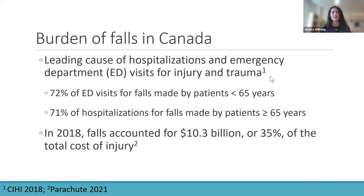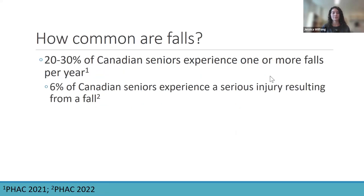In a recent report, 72% of emergency department visits made for falls were made by patients under the age of 65, while 71% of hospitalizations for falls were made by patients older than 65 years. So really, falls are a problem across adulthood, but it becomes a bit more severe in older age groups. In 2018, falls accounted for $10.3 billion, or just over a third of the total cost of injury.